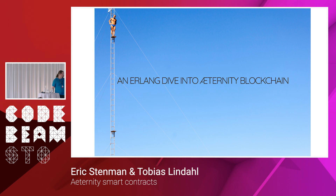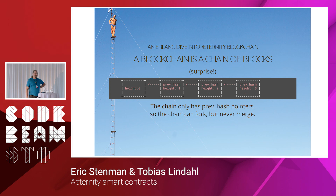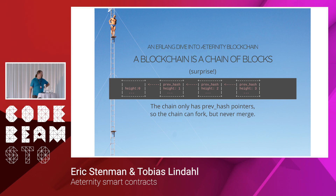We're going to do an Erlang dive into the Eternity blockchain. I'm not going to talk about blockchains in general, but the specific implementation we are doing in Eternity — starting more or less from scratch anyway. So what is a blockchain? Well, a blockchain is a chain of blocks. It's a chain in the way that every block has a pointer to the previous block, and the block also has information on which height it has. The height is the distance from the Genesis block, which is the first block.